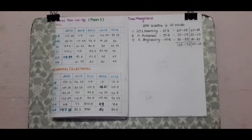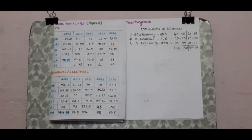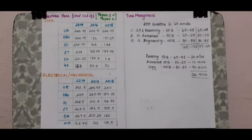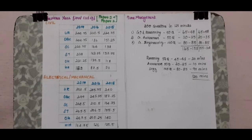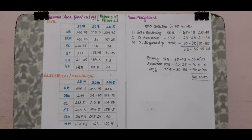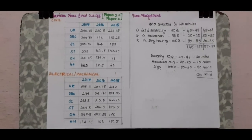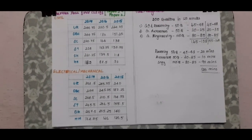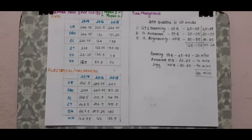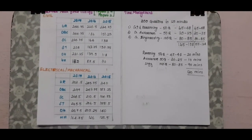In 100 questions, aim to attempt 80 to 85. If you are an electrical or mechanical student, aim to attempt 30 to 35 questions from your specialization. If you score 150 to 160, you will be able to clear Paper 1.